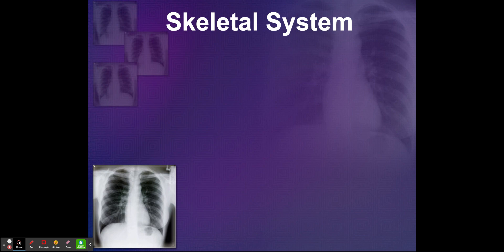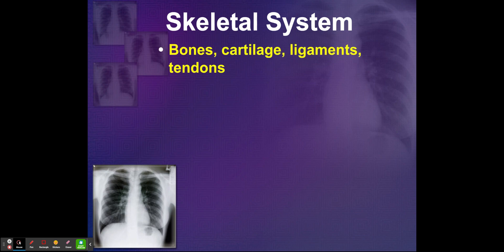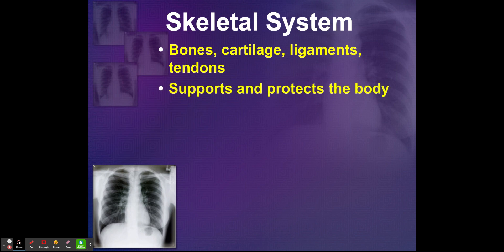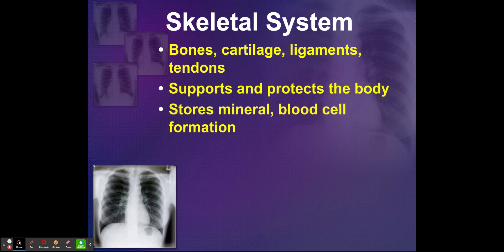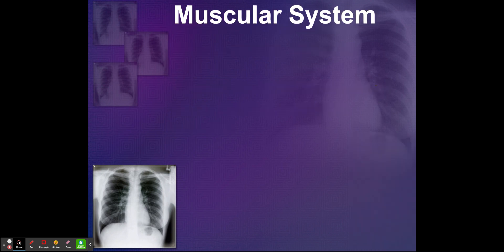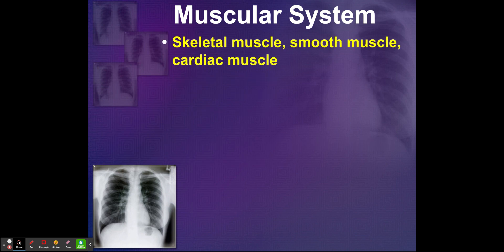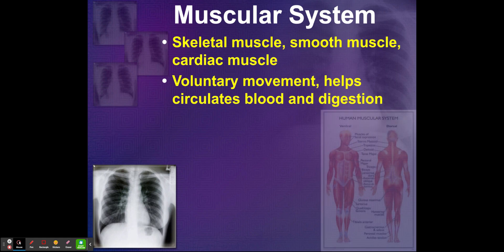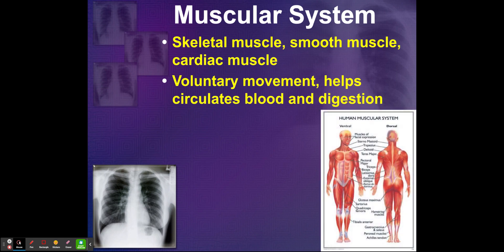The skeletal system includes your bones, cartilage, ligaments, and tendons. It supports and protects the body and stores minerals and aids in blood cell formation. We have your muscular system, which includes your skeletal muscles, smooth muscle, and cardiac muscle. It enables voluntary movement, helps circulate blood, and aids in digestion.